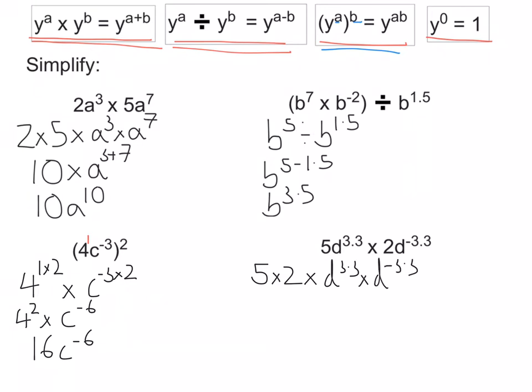So times our powers together, 10. And we've got d. So we've got to add our powers because we're multiplying the terms together. So we're going to have 10d. Now 3.3 plus negative 3.3 is 0. And we know from up here that anything to the power of 0 is 1. So 10d to the 0 is the same as saying 10 times 1. So the answer is 10.